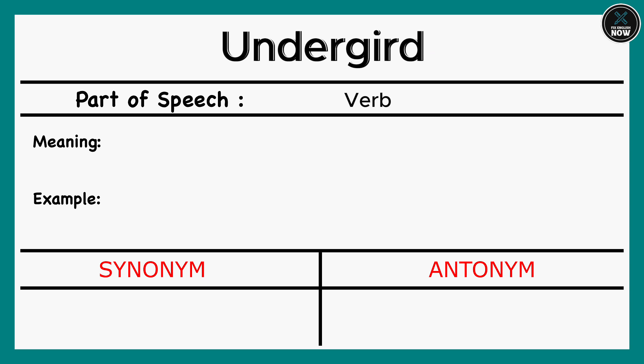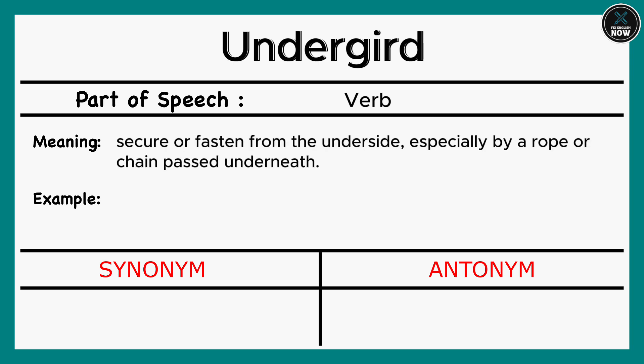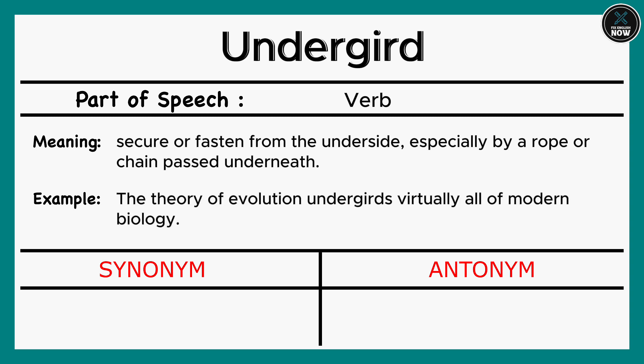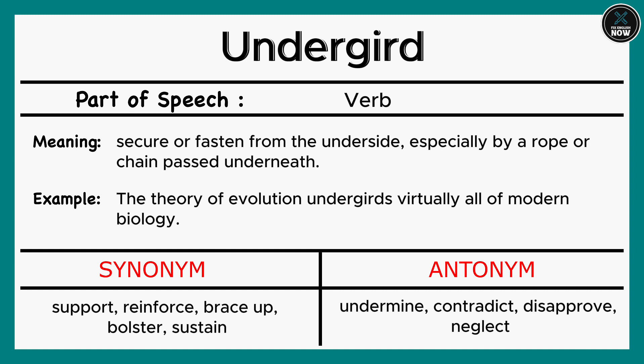Undergird: Secure or fasten from the underside, especially by a rope or chain passed underneath. Example: The theory of evolution undergirds virtually all of modern biology. Synonyms: Support, Reinforce, Brace up, Bolster, Sustain. Antonyms: Undermine, Contradict, Disapprove, Neglect.